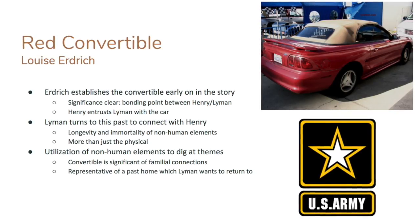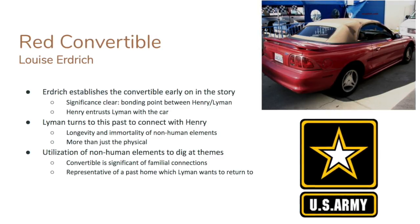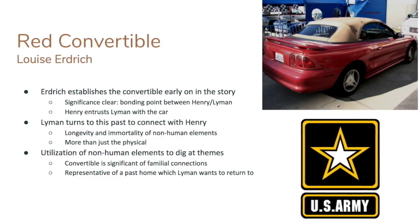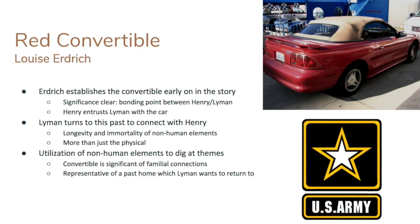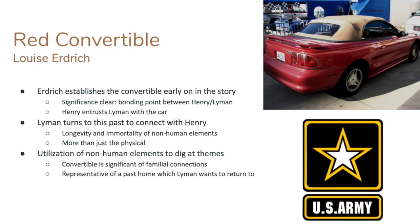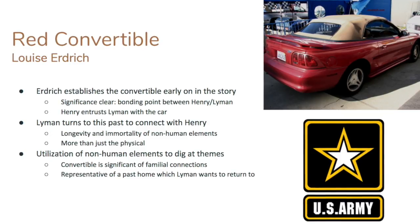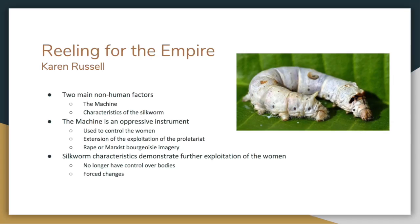We see the Red Convertible carrying a certain characteristic of longevity and immortality — even though it is just a non-human element, the immortality of their relationship is carried on through it, so it is more than just the physical. Erdrich utilizes these non-human elements to really dig at the themes of familial connection, and we also see the convertible as a representative of a past which Lyman wants to return to — a past where he and his brother were strongly connected.